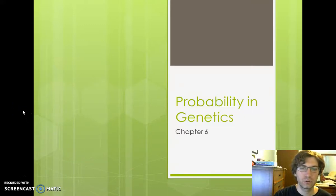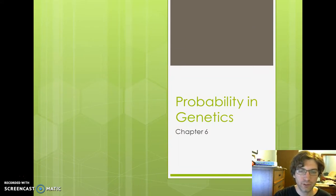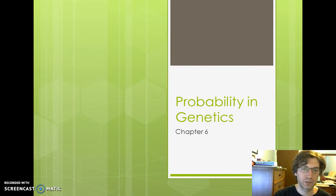This section is going to be talking about probability and genetics. We're going to first look at a review of what probability is, and then we're going to look at how that affects genetics and how we use that in determining the traits of our offspring.